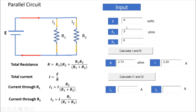Now go to PowerPoint and test. I enter E = 7, R1 = 8, R2 = something. First I calculate R = 3.43 ohm and I = 2.04 ampere. Then pressing 'Calculate I1 and I2' gives I1 = 0.87 ampere and I2 = 1.17 ampere. So you can change values of E, R1, and R2 and get R, I, I1, and I2 accordingly.